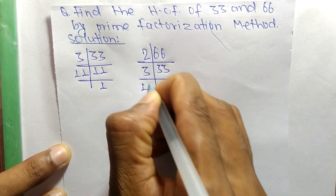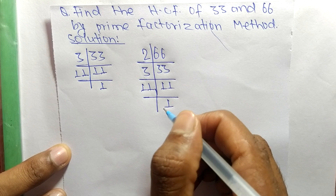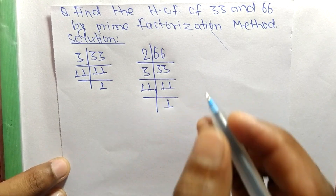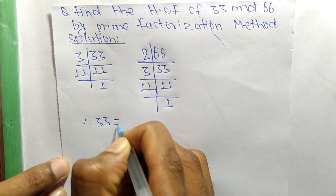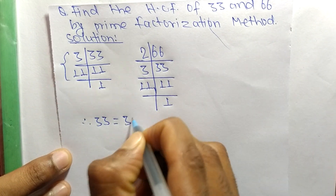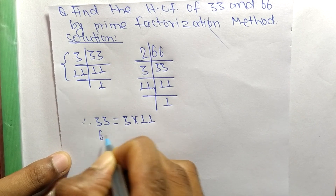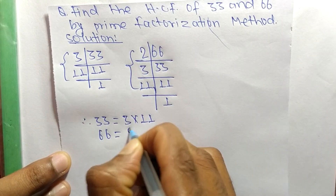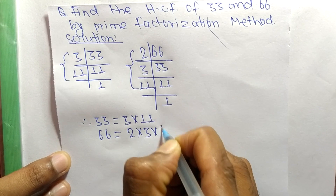And 11 times 1 equals 11. So from these prime factors, we can write: 33 is equal to 3 times 11, and 66 is equal to 2 times 3 times...